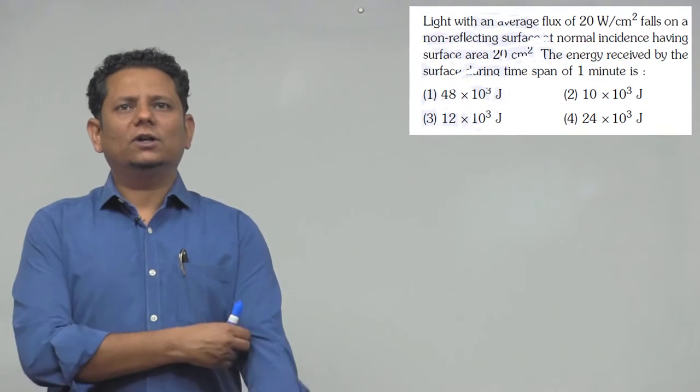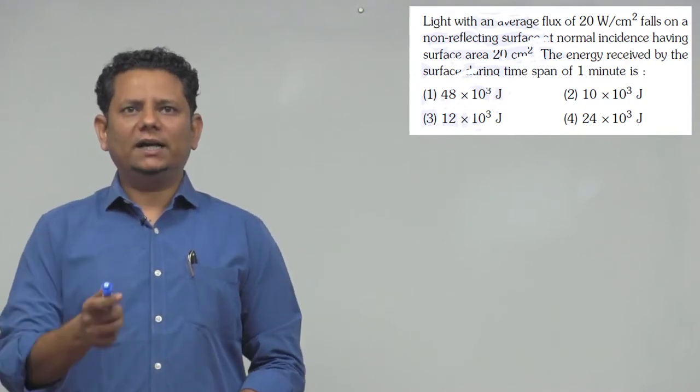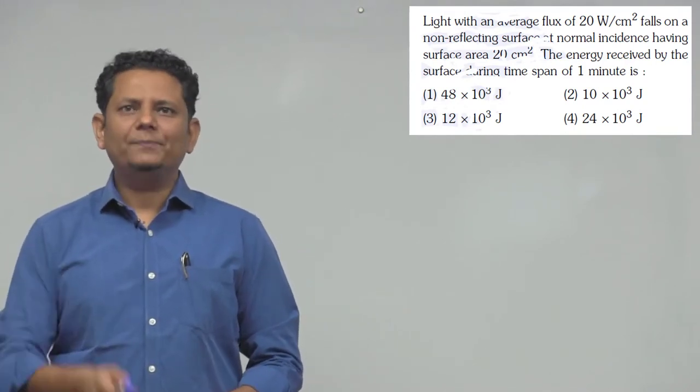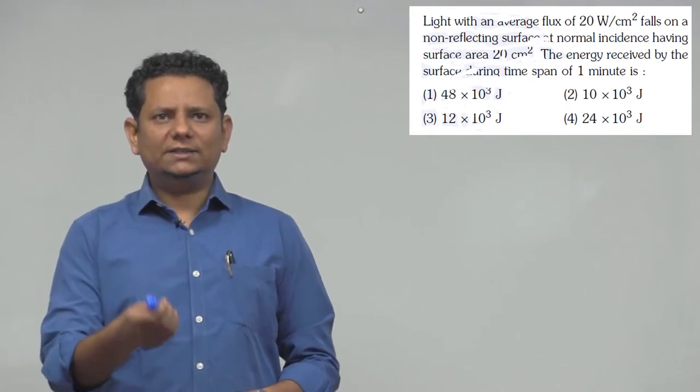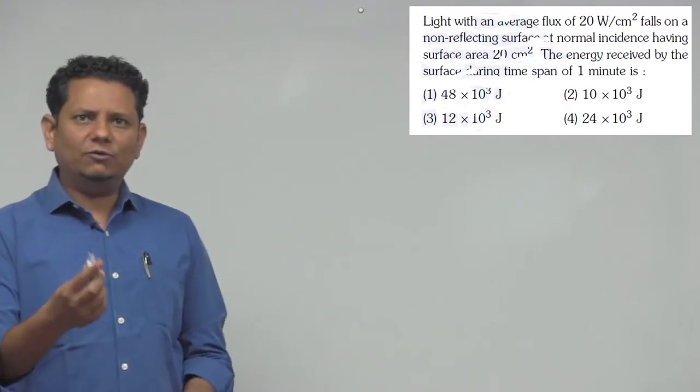Next question: Light with an average flux of 20 watt per centimeter square falls on a non-reflecting surface at normal incidence having area of 20 centimeter square. Energy received by the surface during the time span of one minute.